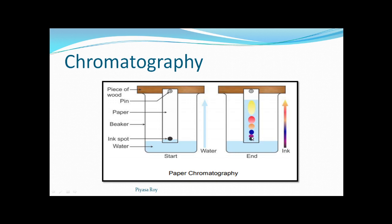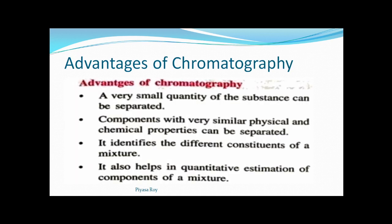Slowly the water will rise up along with the components of the mixture, and according to their solubility in the solvent, we will be getting the spots. The more soluble component makes one spot and the least soluble makes another. In this manner, we can separate components of dye or any mixture which are having very similar properties. The main advantage is that components with very similar physical and chemical properties can be separated.